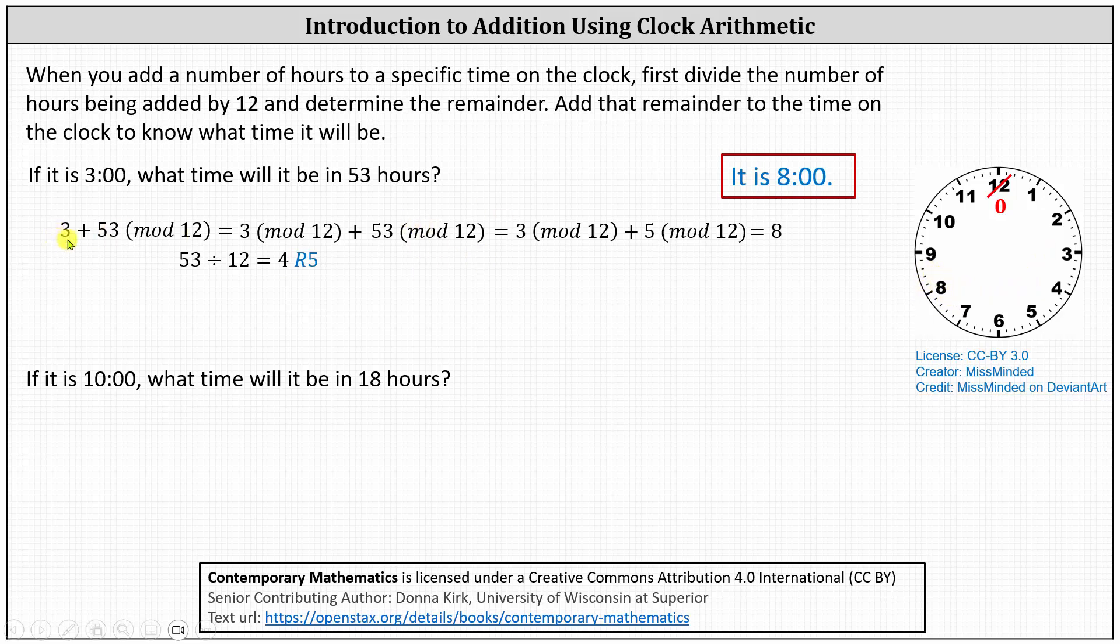The other option would be to find this sum first. 3 plus 53 mod 12 equals 56 mod 12. And now we divide 56 by 12, which gives us a remainder of 8. Notice the result is the same. It's 8 o'clock. So the first method resembles using the clock, but the second method does tend to be quicker.